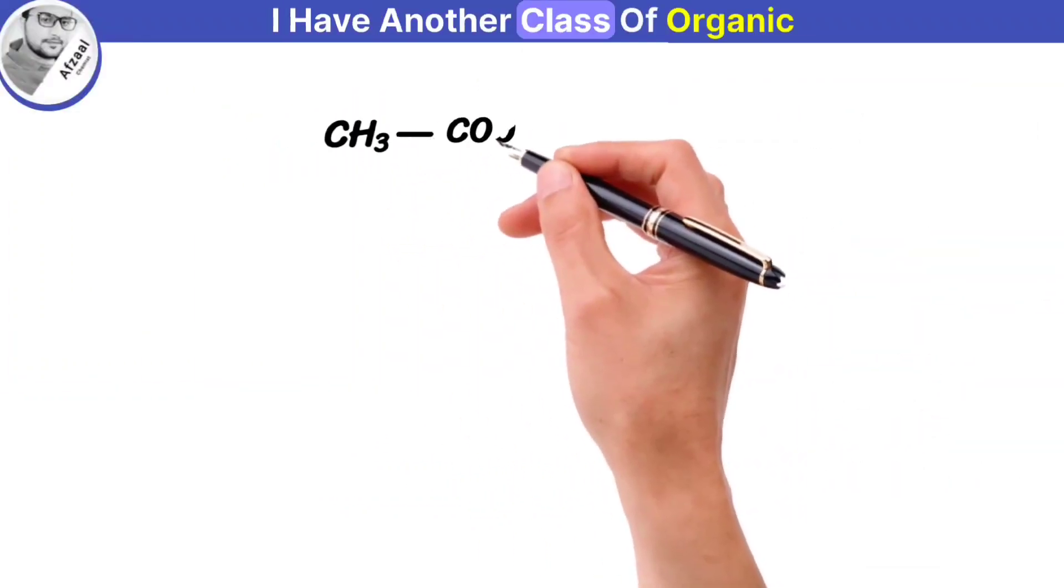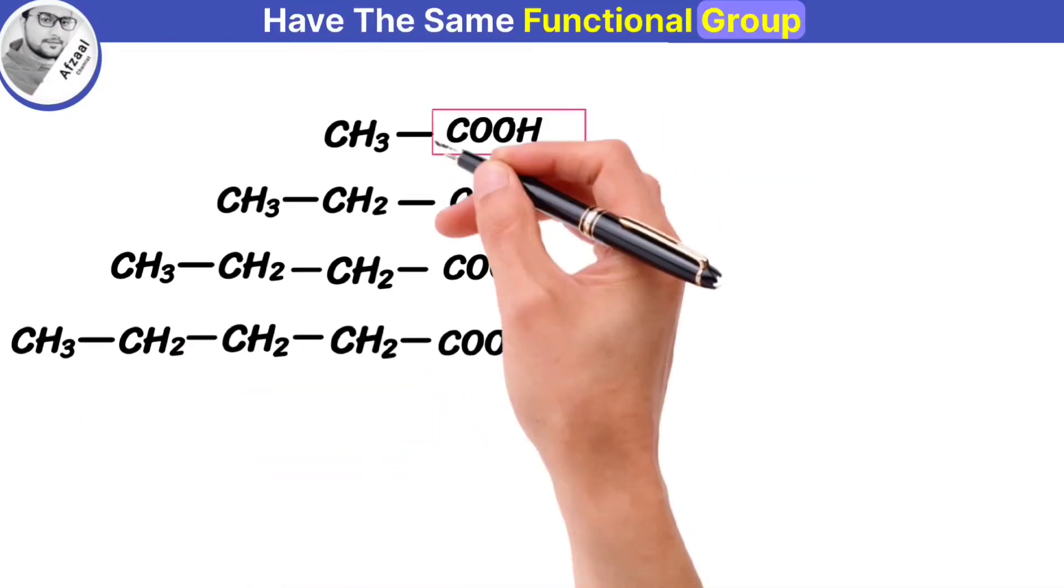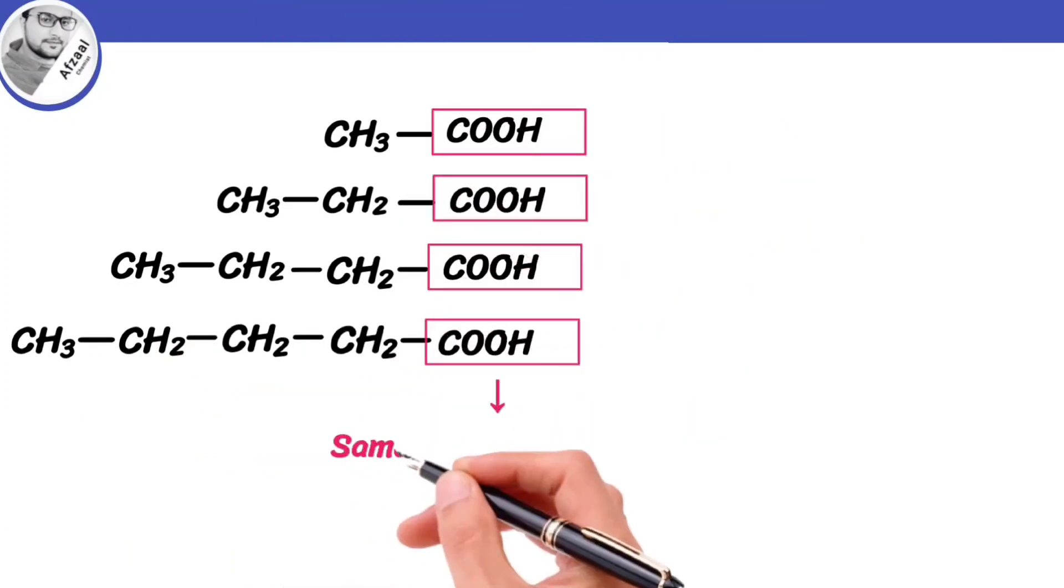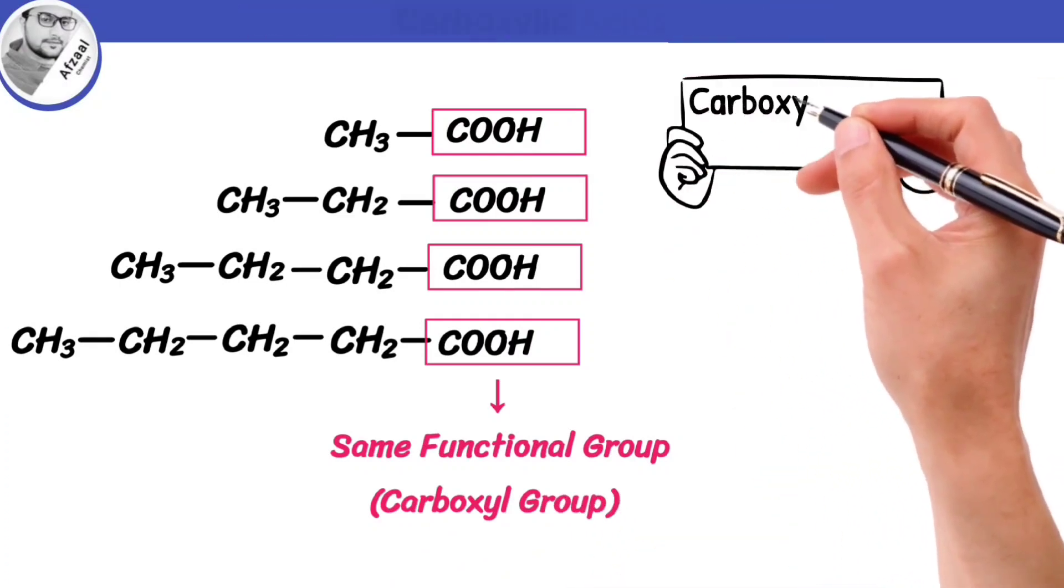I have another class of organic compounds. All these compounds have the same functional group, i.e. carboxyl group. So they are classified into the same homologous series, named as carboxylic acids.